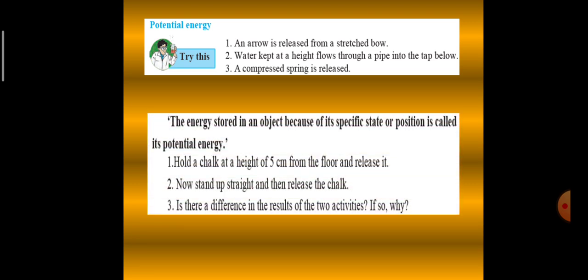The next question is, if the objects were not brought in those states, would they have moved? Of course not. If the objects were not brought in those states, they would have not moved. If we do not stretch the bow and arrow, the arrow will not move. So, the energy stored in an object because of its specific state or position is called its potential energy.